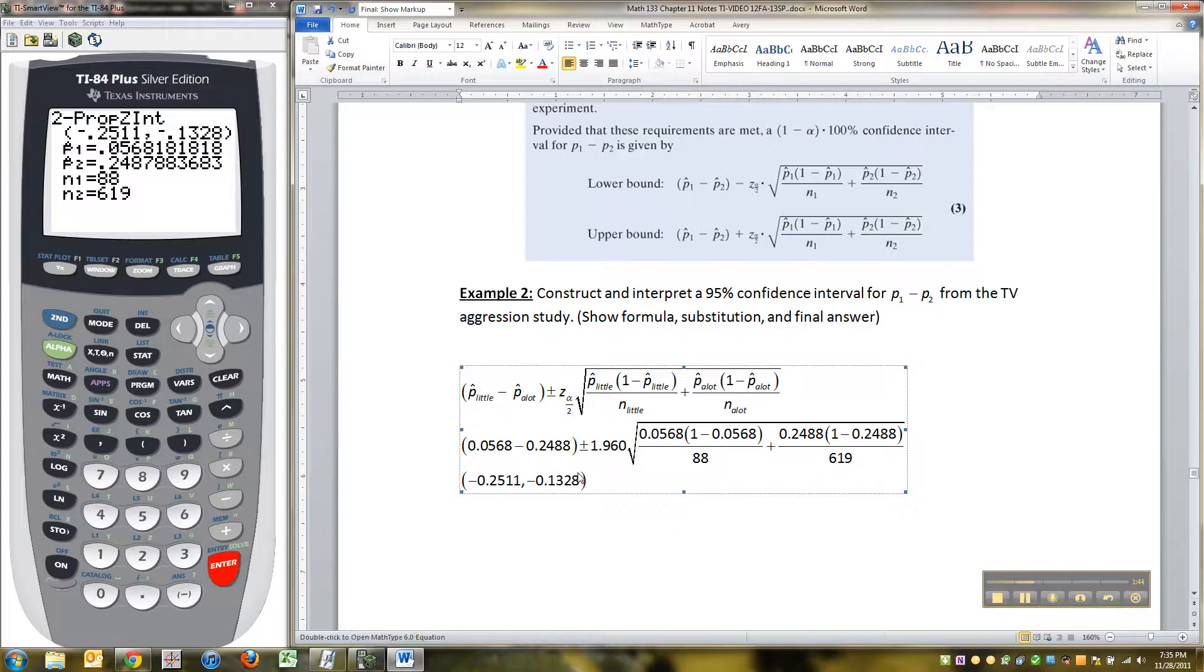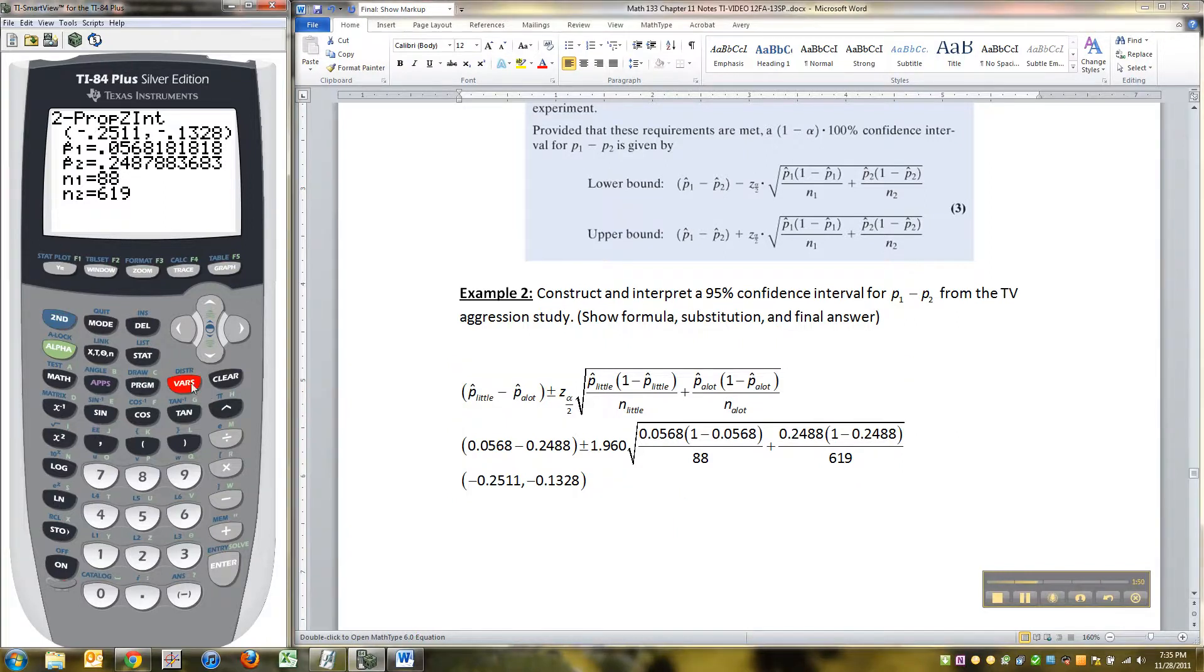Now, where did I get the 1.96 from? And I wrote the answer. See right there. Now, the 1.96 comes from, if you use inverse norm, because this is a normal curve, that's why it's using the z, and I take 0.025, close parentheses, enter. There it is, negative 1.96. And again, the negative positive thing, you don't have to worry about the formula takes care of that with the plus-minus symbol in there.